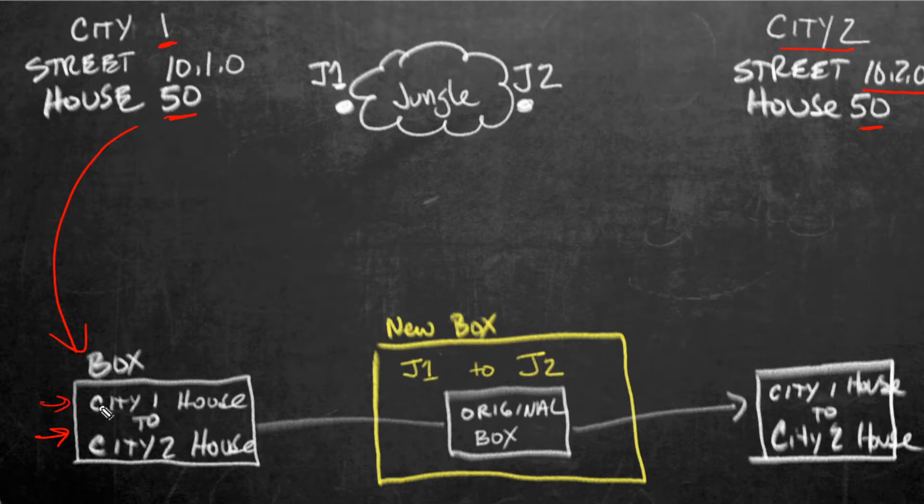In that box, they'd put their own source address, like the return address, and for the destination address for where we're going to send this package to, they would put the information for the house at city two. So then they would ship that off via their local carrier.